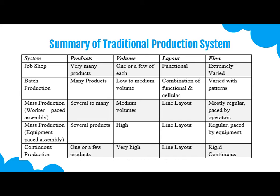In mass production with worker-paced assembly, products are several to many, volume is medium, layout is generally a line layout, and flow is mostly regular and paced by operators. In mass production with equipment-paced assembly, products are several, volume is typically high, layout is line, and flow is regular and paced by equipment. In continuous production, products are one or very few, volume is very high, layout is generally line, and flow is rigid and continuous.